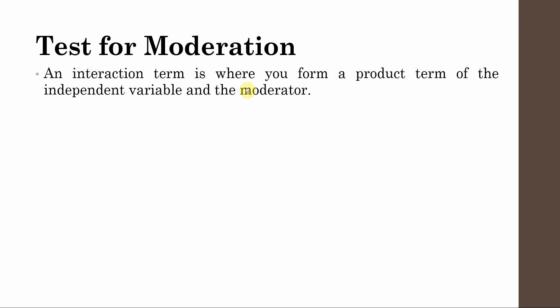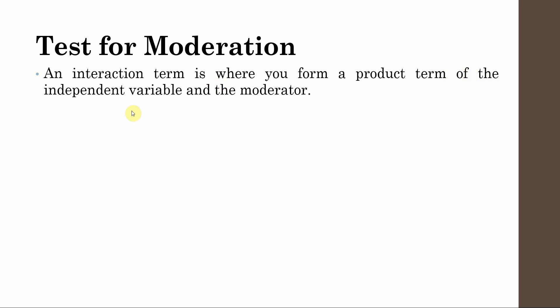An interaction term is where you form a product of the independent variable and the moderator. This interaction term will tell you if the presence of the moderator is significantly influencing the relationship from the independent variable to the dependent variable. If the effect of that interaction term on the dependent variable is significant — that is, the p-value is less than 0.05 — this means that the moderator is significantly altering the relationship between IV and DV.